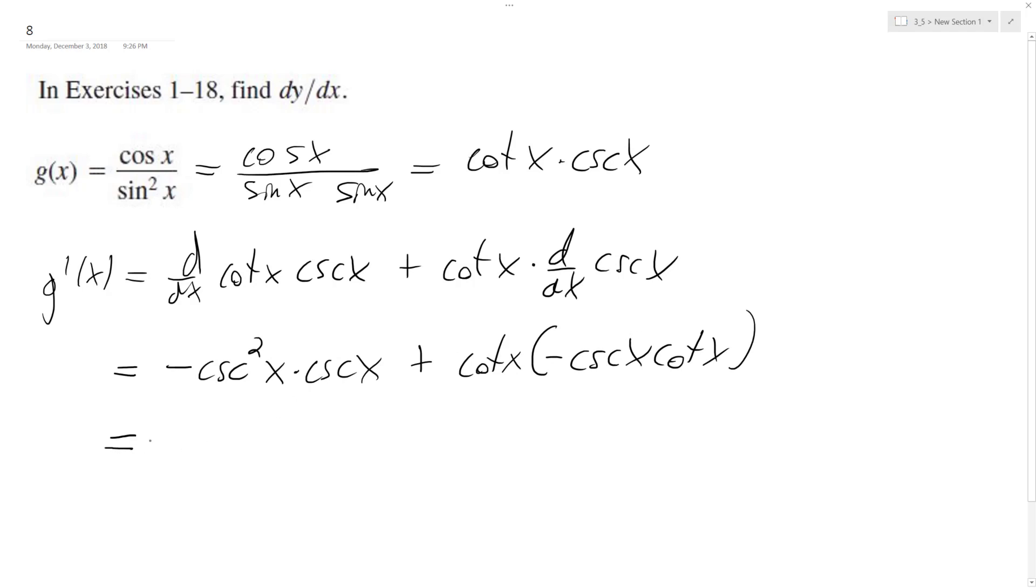So, kind of summing things up here, we get negative cosecant cubed x minus cosecant x and then cotangent squared x.